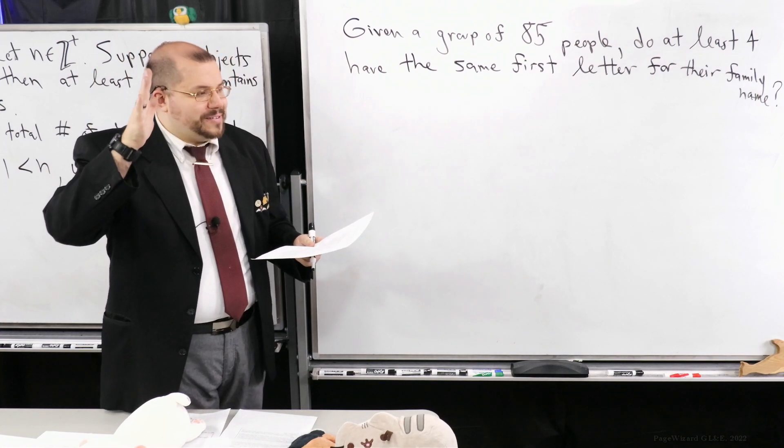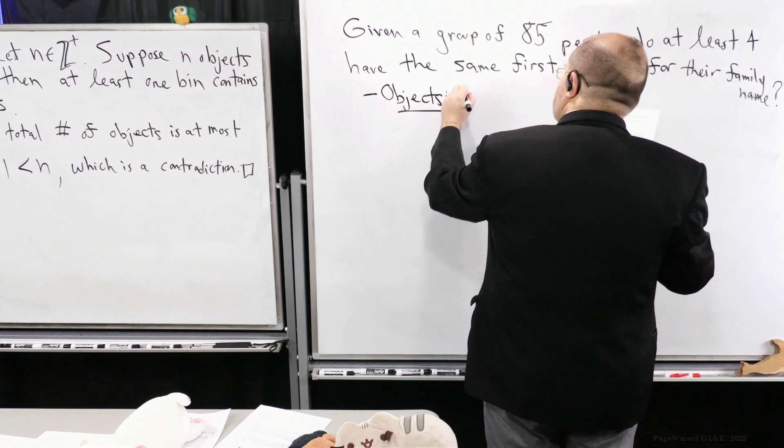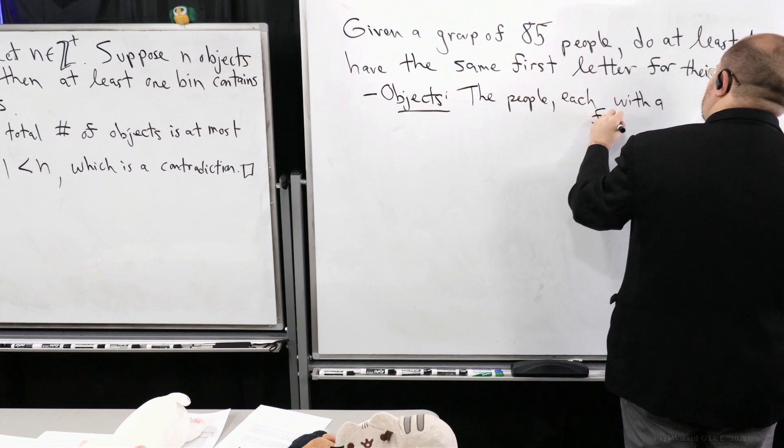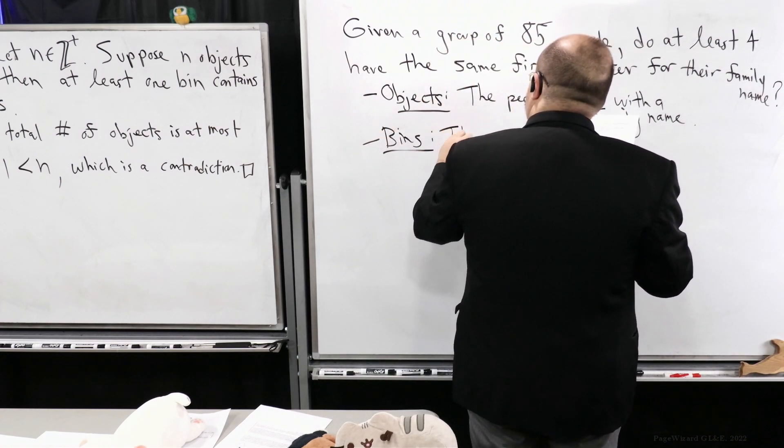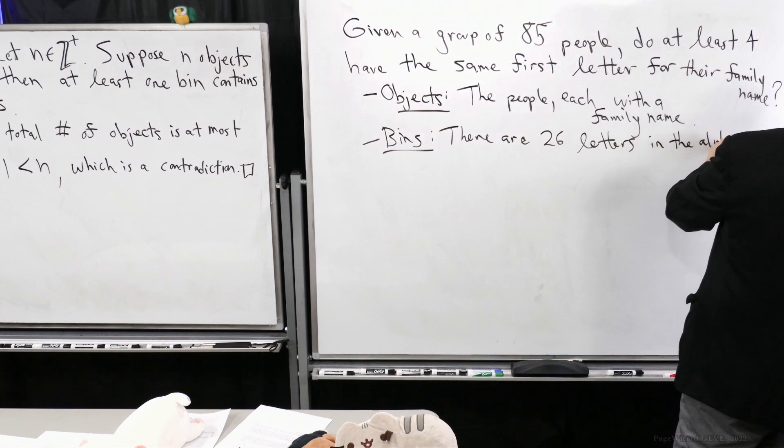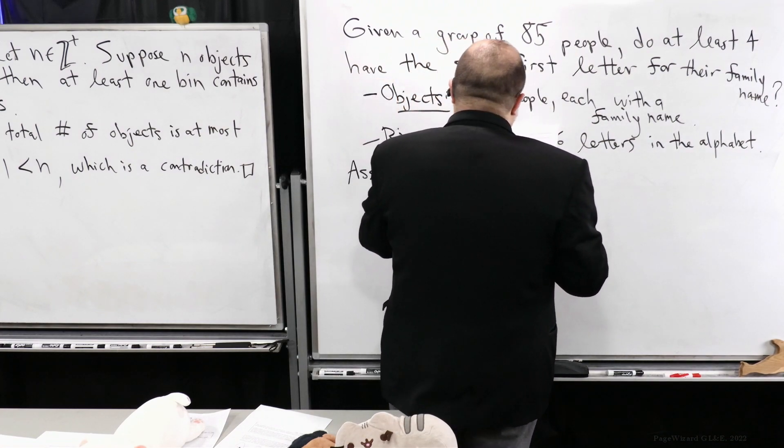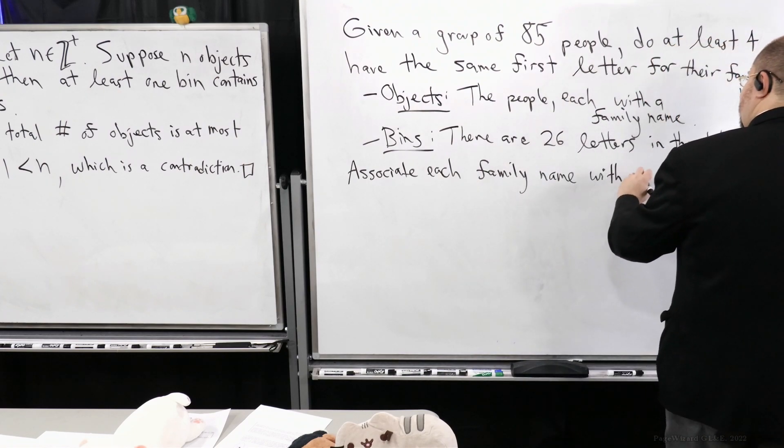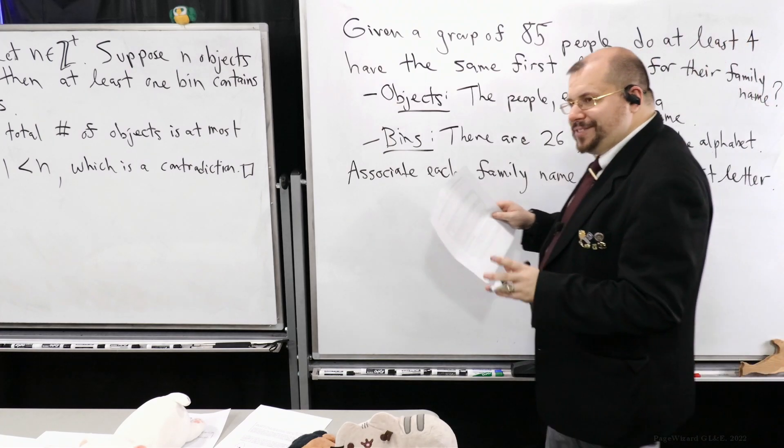So let's do the same thing we did with the pigeonhole principle. We identify the objects and the bins. And here it's very natural. What are the objects? The people, each with a family name. And we have the bins. There are 26 letters in the alphabet. So now all you have to do is you associate each family name with its first letter.